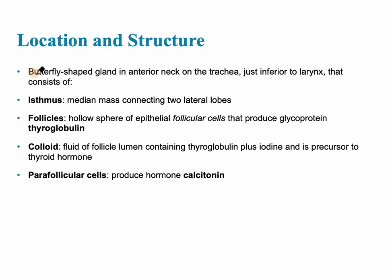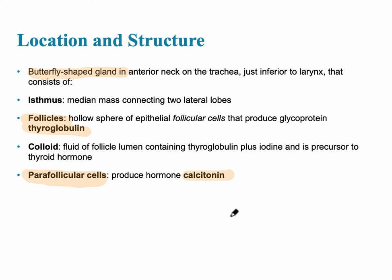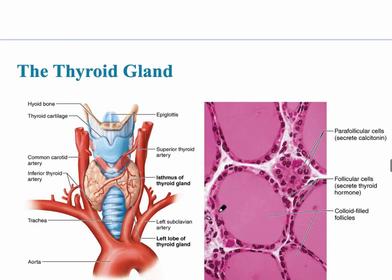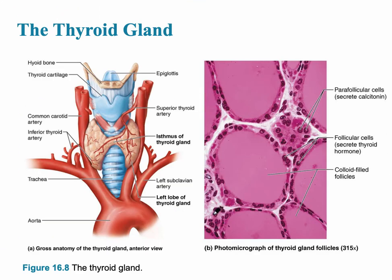The thyroid gland is a butterfly-shaped gland in the anterior neck near the trachea. The most important cells are the follicle cells, which produce thyroglobulin and eventually thyroid hormone. There are also parafollicular cells, which produce the hormone calcitonin. Calcitonin affects blood calcium levels and calcium homeostasis.